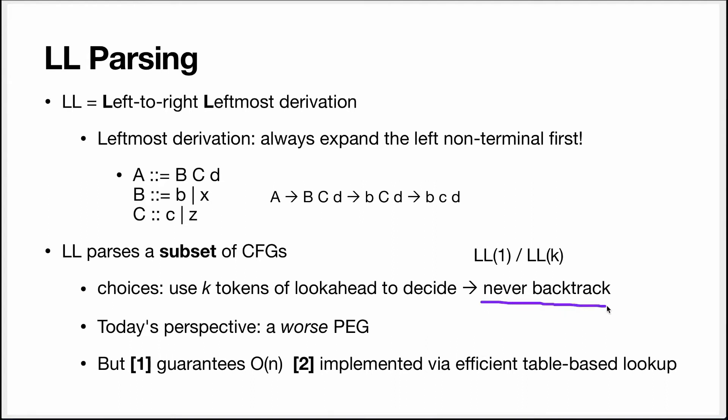It looks at the first token and uses it to decide which choice to explore, which causes it to never backtrack. This is restrictive: all choice alternatives need to start with a different token — they can never start with the same token, otherwise the LL algorithm cannot decide, and this grammar will not be an LL grammar. The second benefit is that the LL parser can be implemented via a very efficient table-based lookup: you take the first token and look up in a table which choice alternative to use.